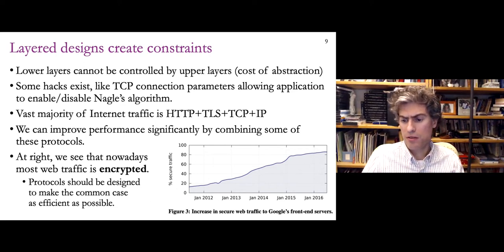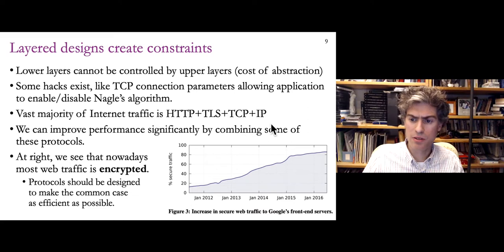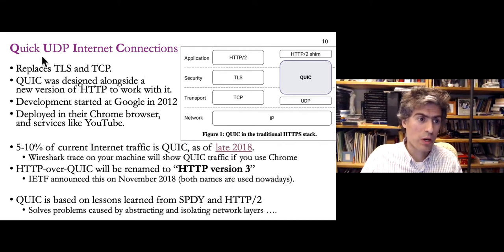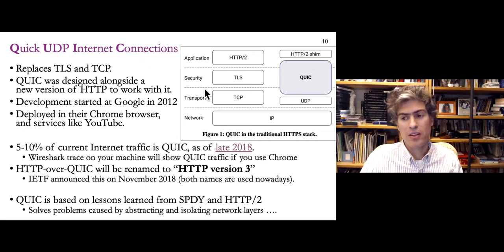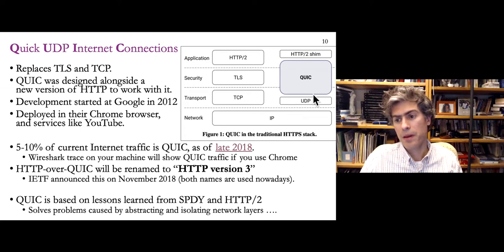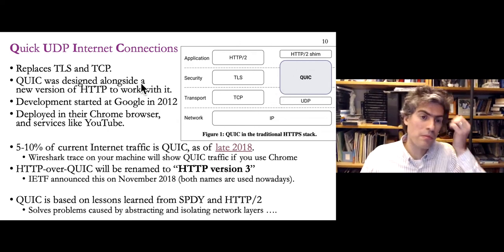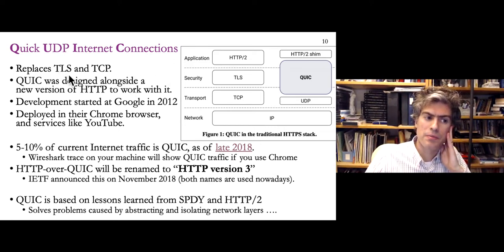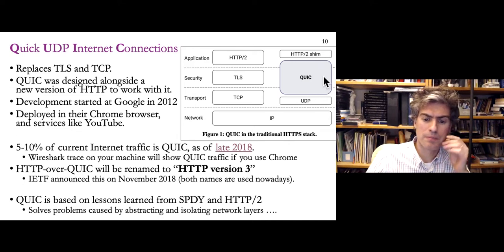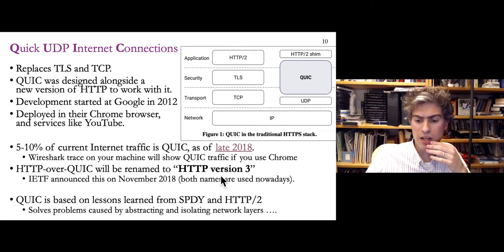Since this particular combination of layers is by far the most common — the vast majority of traffic — maybe we should think about ways to optimize it. QUIC does that. QUIC stands for QUIC UDP Internet Connections. This figure shows how the traditional stack of HTTP, TLS, and TCP has been replaced by QUIC, which combines those three protocols — mainly replacing TLS and TCP. HTTP over QUIC is actually called HTTP version 3, which was recently announced.